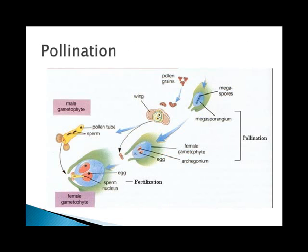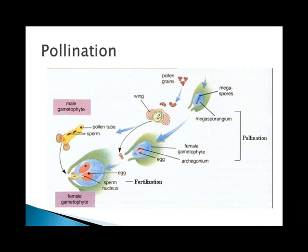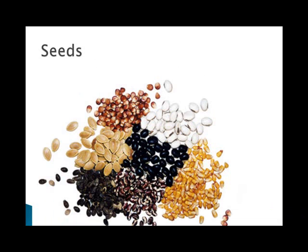Pollination occurs when pollen lands on the stigma at the top of the carpal. The pollen tube grows from the grain into the embryo sac, and sperm is discharged and fertilizes the egg. The zygote — the fertilized egg — develops into the embryo, and the surrounding ovule develops into a seed. The entire ovary then develops into a fruit, which contains one or more seeds. Seeds are dispersed when fruits are moved by wind or animals.